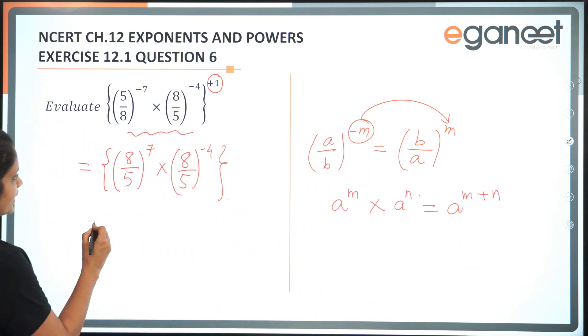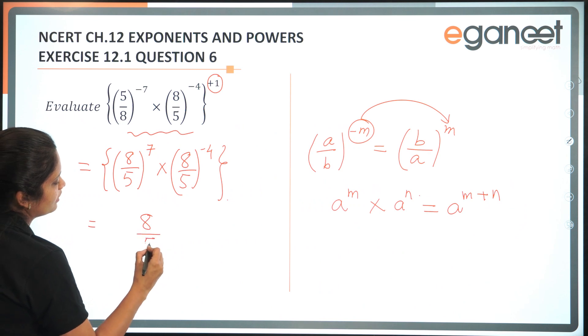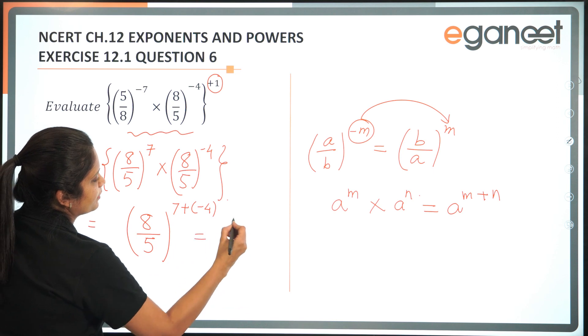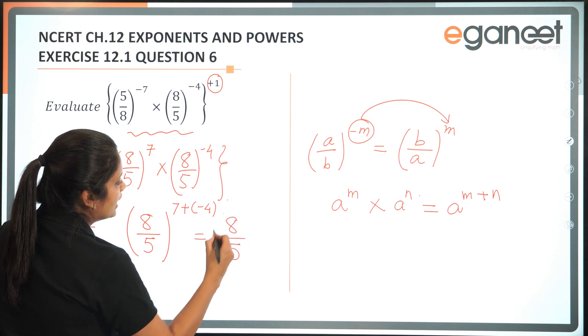Now here what do I get? 8 by 5 raised to the power of 7 plus minus 4, which is 8 by 5 raised to the power of 3.